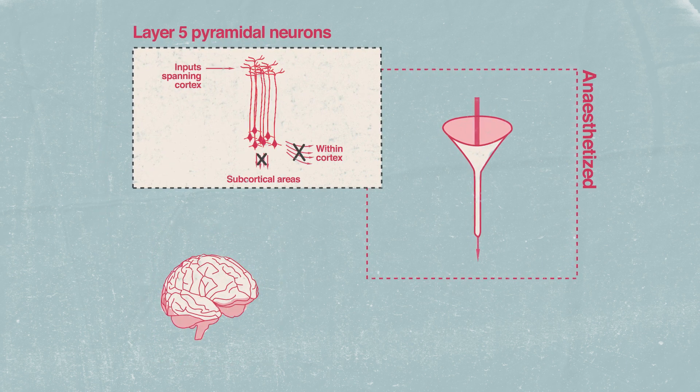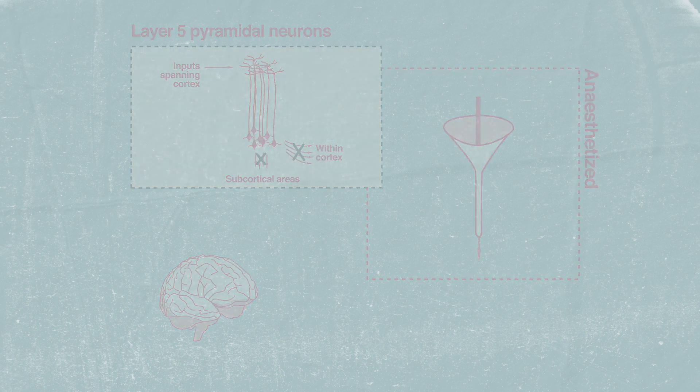We'll let the authors summarize their findings. In this work, we found that among different cortical cell types, only a single cell type shows a common change in activity across different general anesthetics.